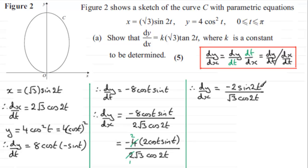So when you get sine of an angle over cosine of the same angle, then that reduces to tan of that angle. Tan of 2t in this case. So we've got minus 2 over root 3 multiplied by the tan of 2t.